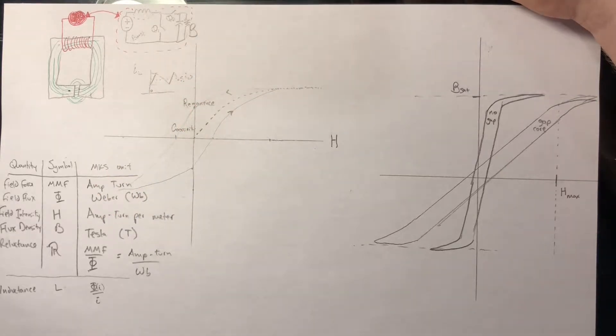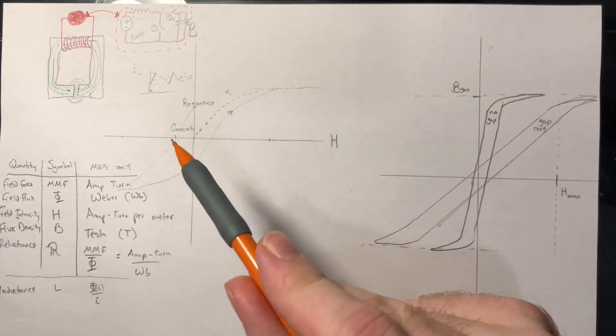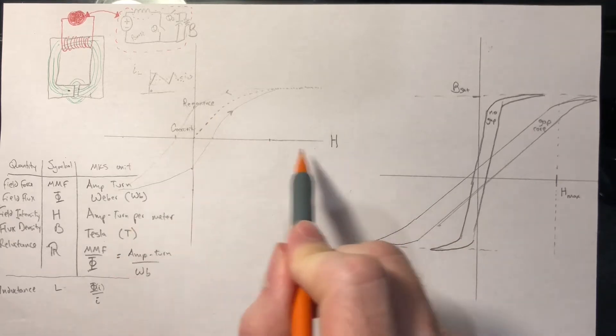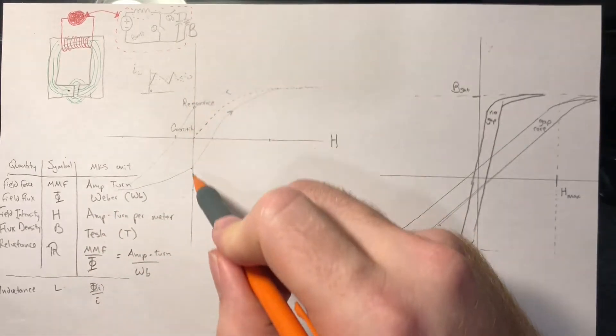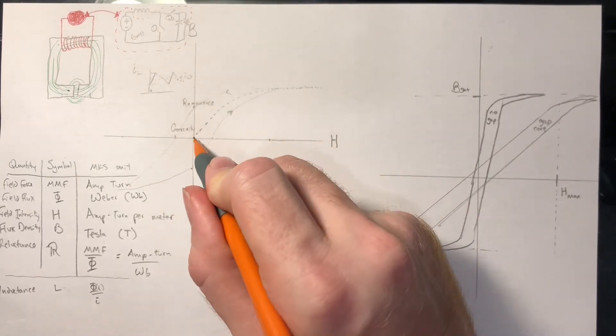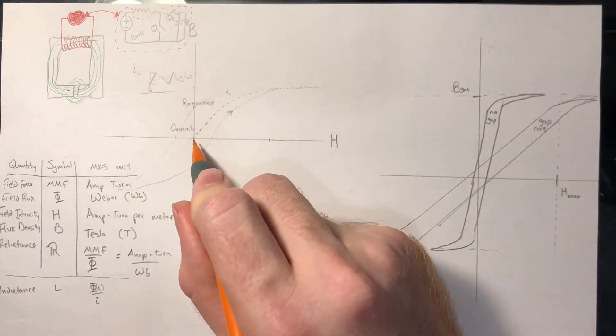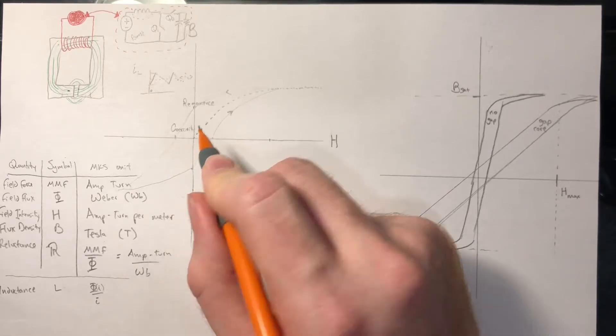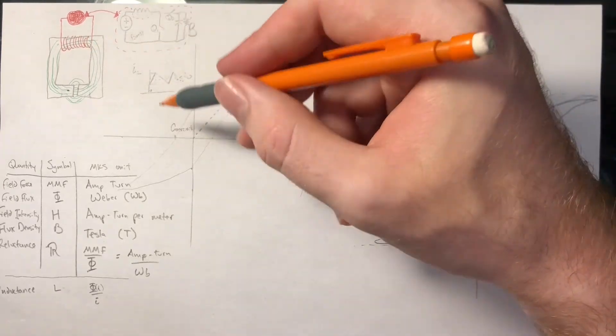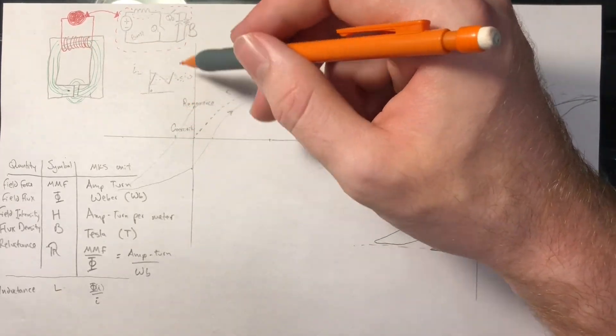And here is where drawing BH curves starts to come in handy. Every time I've learned about them there's always so much math that eclipses just how intuitive it is, so I'm going to go pretty light on the math right now. So the horizontal axis is the excitation, or H, vertical axis is the flux density, or B. This is as we excite a certain core material by putting current through the windings, how magnetized is it going to get?